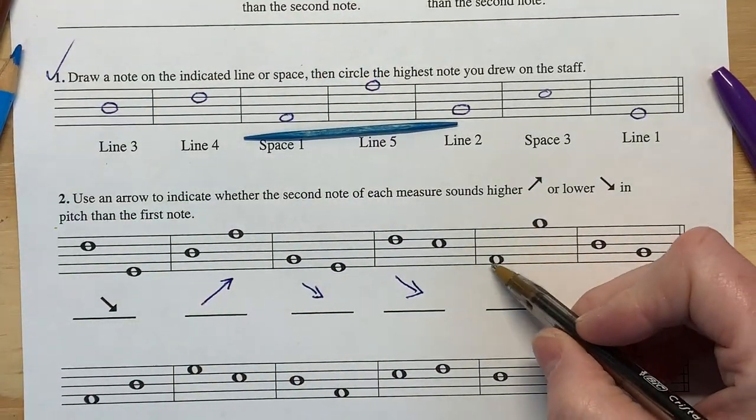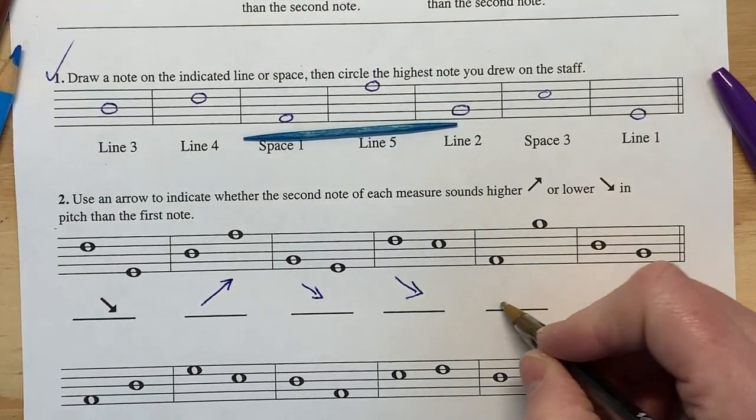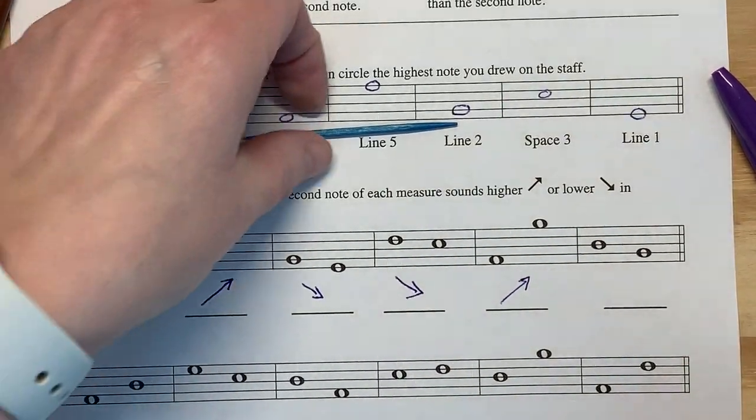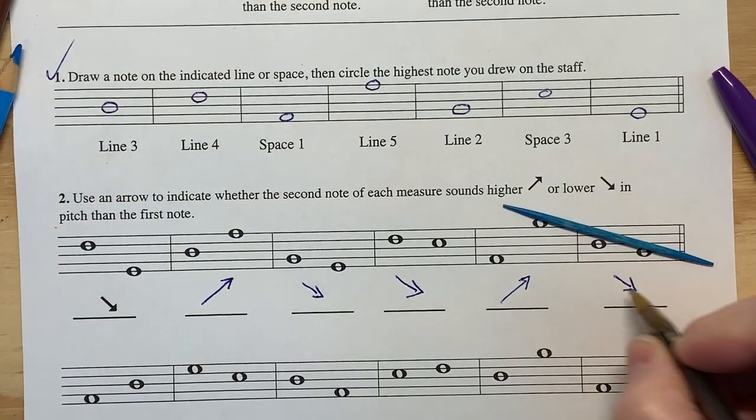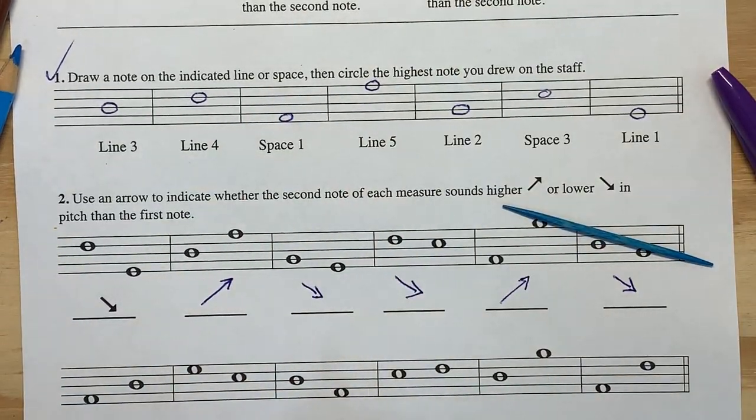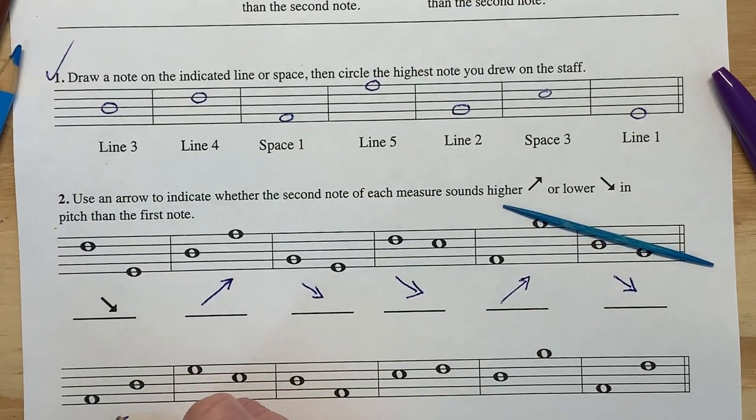Here this one's kind of easy to see. That's moving up. But sometimes when they get really close it's harder to see it and harder to figure out. So right here a larger jump. A lot of the times it's easier to see that.